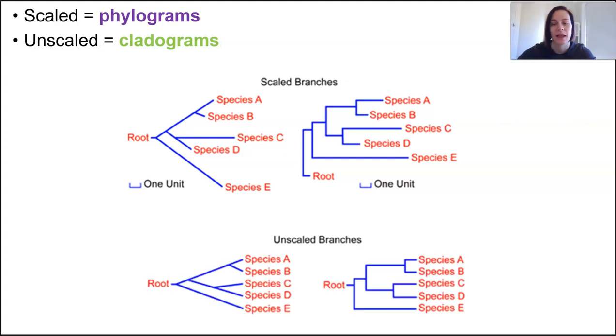Those trees without scales are known as cladograms, and the branch lengths of the tree are not proportional to any amount of evolutionary change.